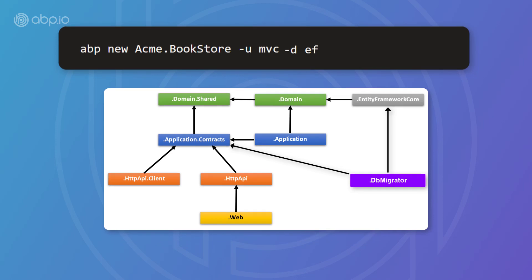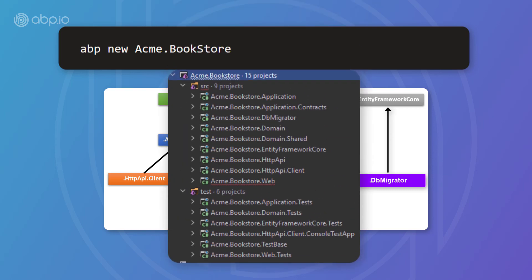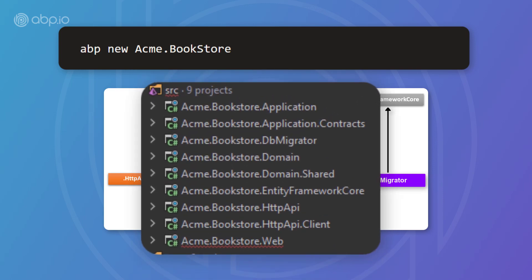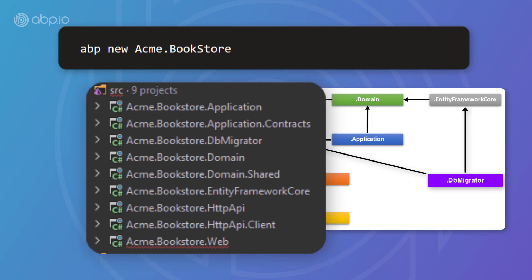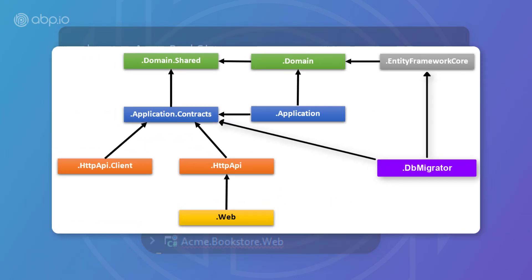Now for the solution structure. Based on these options, we'll get a slightly different solution structure. The default structure, if we don't add any additional options, will be as shown. The projects are organized in source and test folders. The source folder contains the actual layered application based on domain-driven design principles, and this diagram shows the layers and project dependencies of the application.